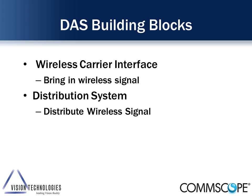There are two basic building blocks. The first is what I call the wireless carrier interface — how do I bring the signal into the building? The second is the distribution system itself — how do I distribute that wireless signal? Those are the two parts we're talking about today.